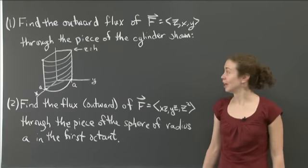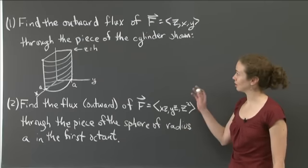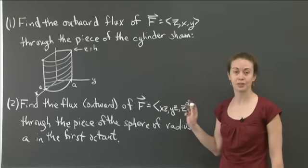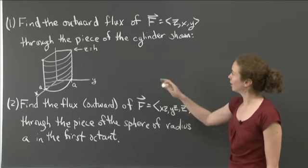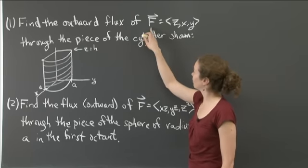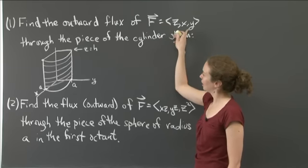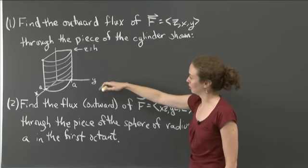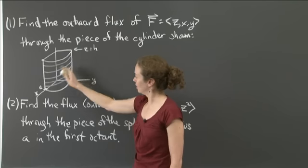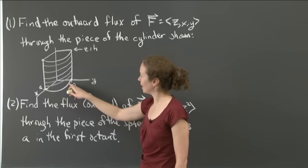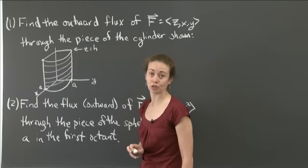Welcome back to recitation. In this video, I'd like to do two problems that ask us to determine the flux of a vector field along a surface. The first one is to find the outward flux of the vector field (z, x, y) through a piece of a cylinder shown — a cylinder of radius a, taking the piece in the first octant up to height h.